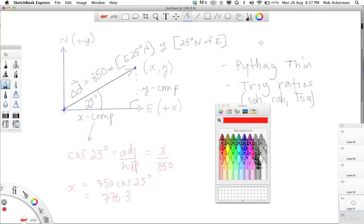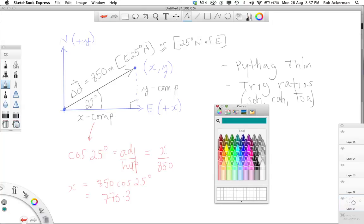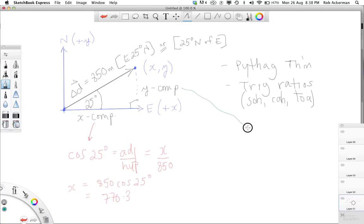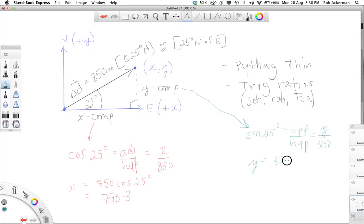Now I'm going to use a different color for the y component, just so that you can keep everything straight. I'm feeling green today, so I'm going to pick green there. And so the y component, this is the side opposite the 25 degree angle, so that's asking you to use sine theta, because sine theta is opposite over hypotenuse, and so the opposite side is your y component. Your hypotenuse is 850. And so what that's going to give you is y equals 850 sine 25 degrees, and my calculator tells me that this number is 359.2 to one decimal place.